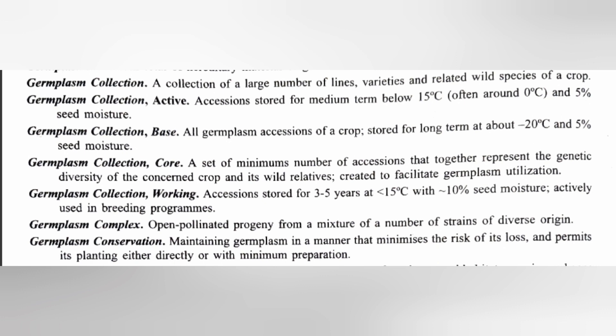Active collection: germ plasm accessions stored for medium term, below 15 degrees Celsius — often around zero degrees — and five percent seed moisture. Now, base collection: all germ plasm accessions of a crop stored for long term.